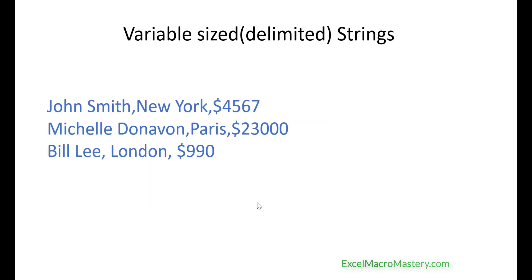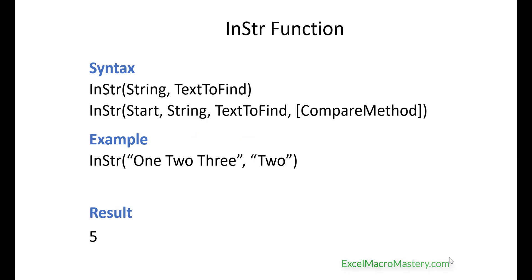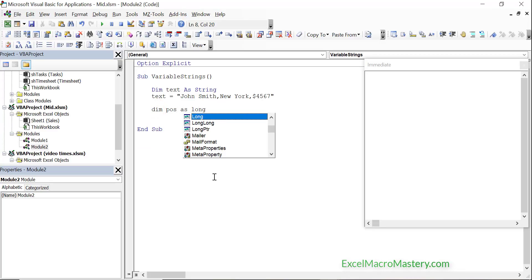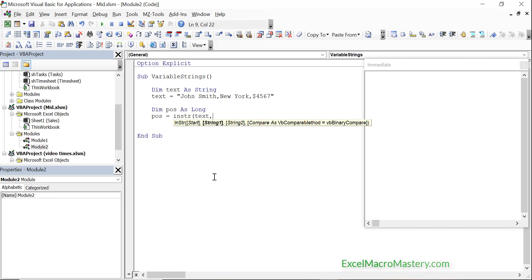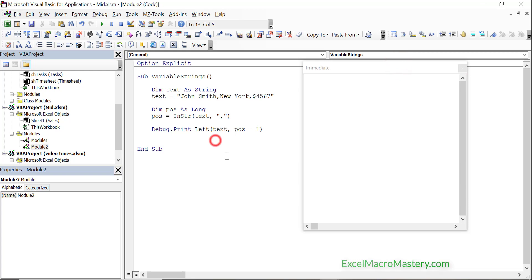Variable strings or delimited strings are when the fields can be of any length. They are normally separated by some delimiter, the most common being a comma — you will see this commonly used in CSV files. If we want to extract from a delimited string with left, right, or mid, then we must use the InString function to find the position in the string. When we get the position we can then use it to retrieve the portion of the string that we want to extract. Let's get the left field from this string using InString. We first use InString to find the position of the first comma and then we use left to extract. Let's run the code and you can see the result.